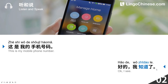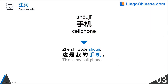Okay, let's learn three new words. 手机, 手机 — cell phone. For example: 这是我的手机。